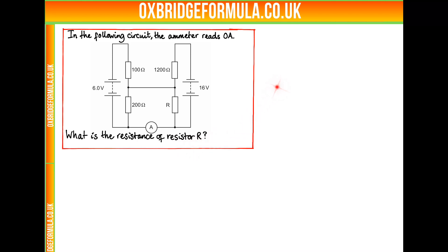So how can we use this information of the ammeter reading zero amps? Well we know no current will be going through this ammeter so we can cross this through. This is almost disconnected in that sense.